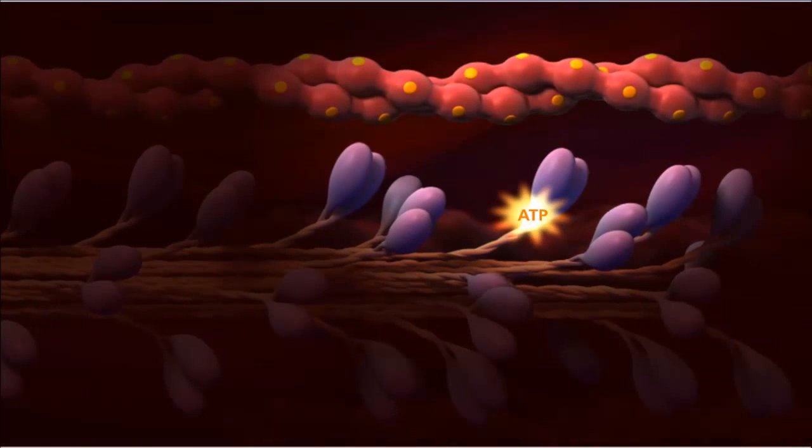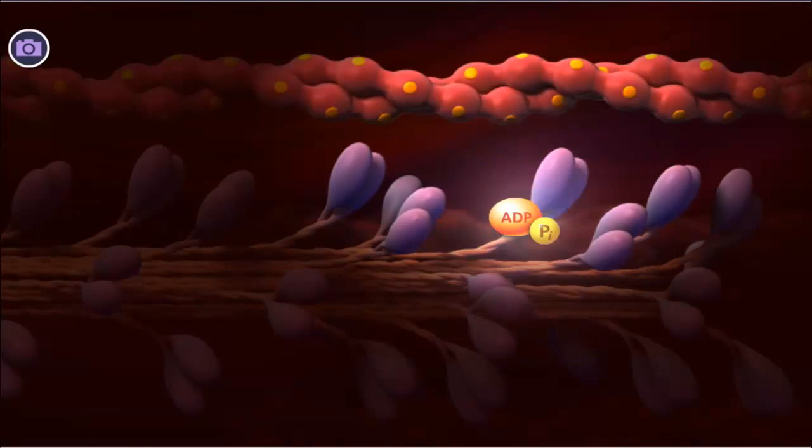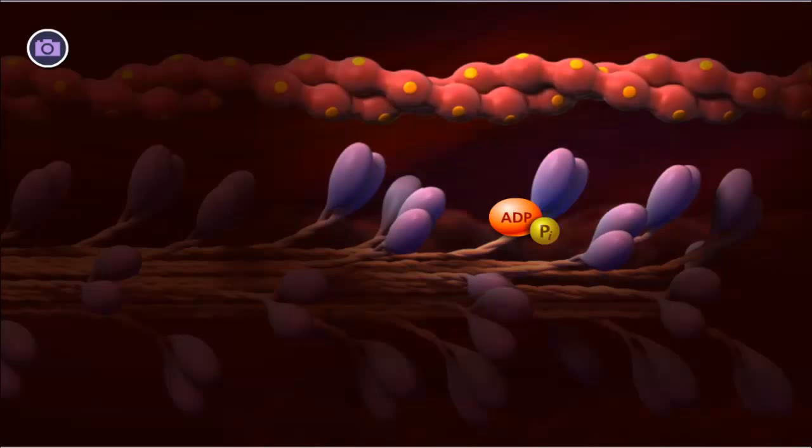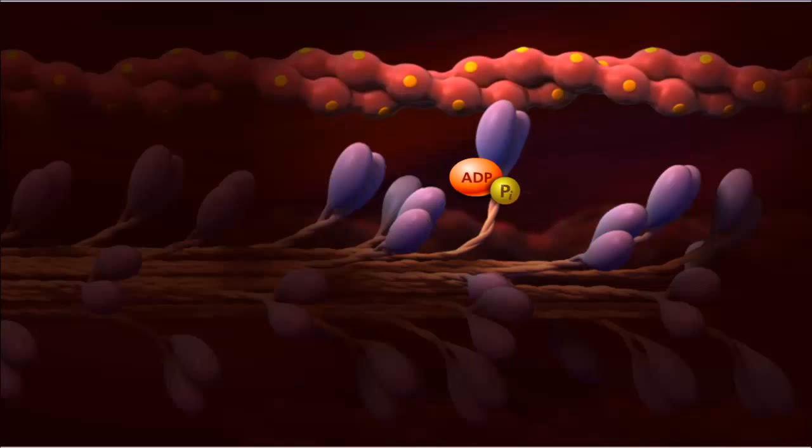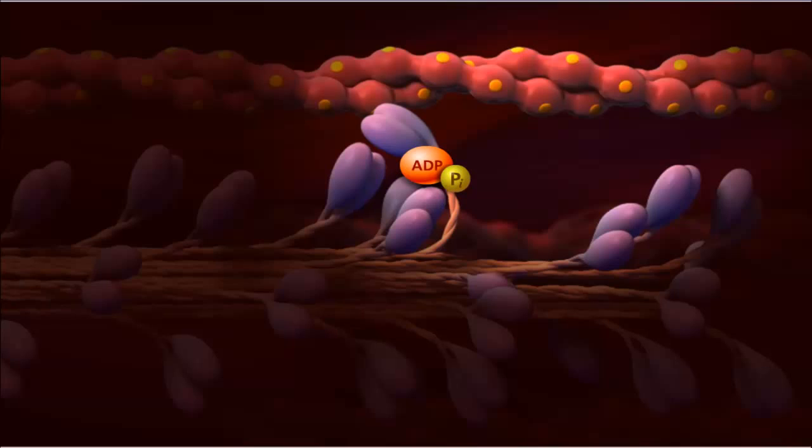A contraction begins when a bound ATP is hydrolyzed to ADP and inorganic phosphate. This causes the myosin head to extend and attach to a binding site on actin, forming a cross-bridge. An action called the power stroke is triggered.